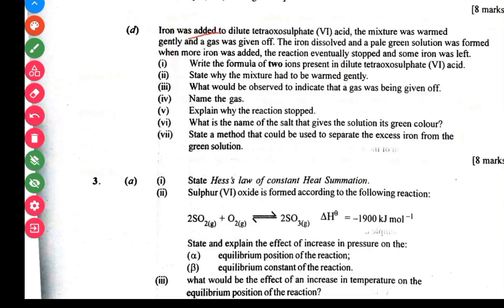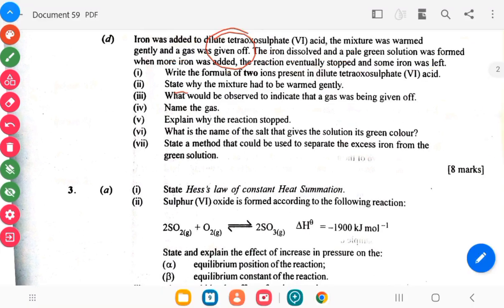Iron was added to dilute tetraoxosulphate VI acid. The mixture was warmed gently and a gas was giving off. The ion dissolved and a pale green solution was formed. When more iron was added, the reaction eventually stopped and some iron was left. Write the formula for the two ions present in the dilute tetraoxosulphate VI acid. State why the mixture had to be warmed gently.